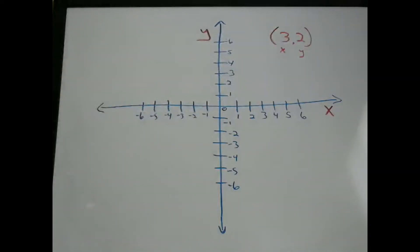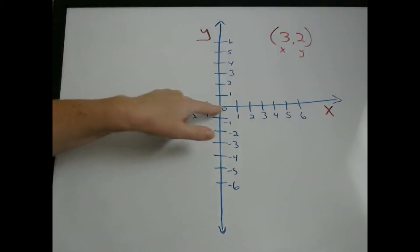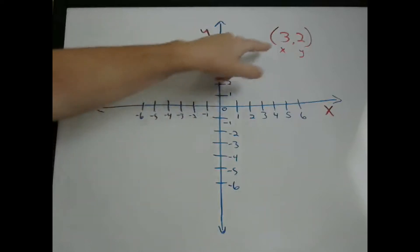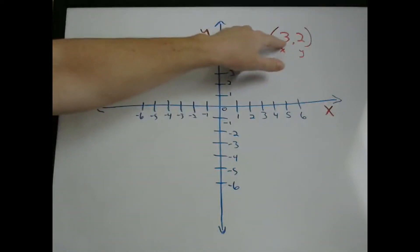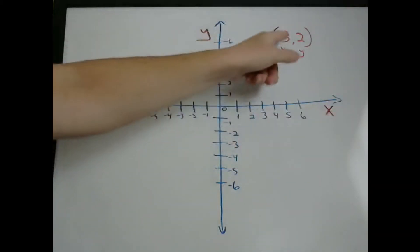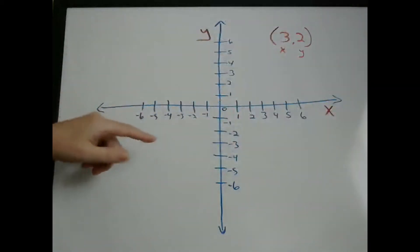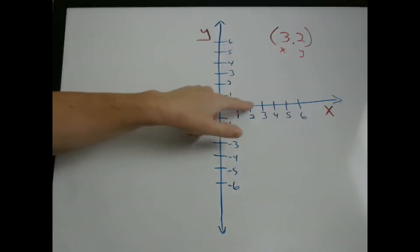So when you're plotting a point such as (3, 2), you always start at the origin, at the 0, 0 point. For your x-coordinate, you go that many over. If it's positive, you're going to go to the right. If it's negative, you're going to go to the left. So we're going to start at 0 and go over 3.